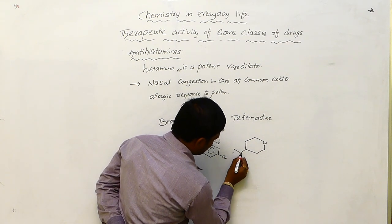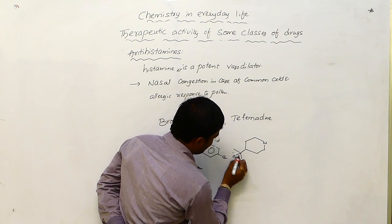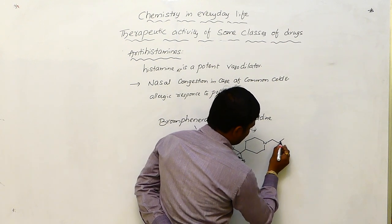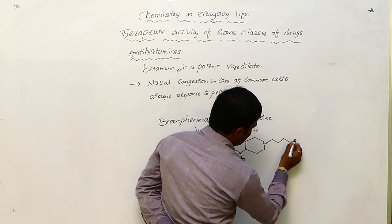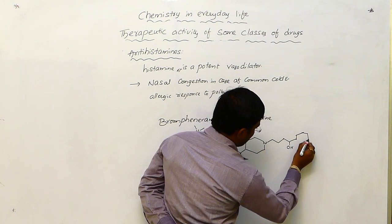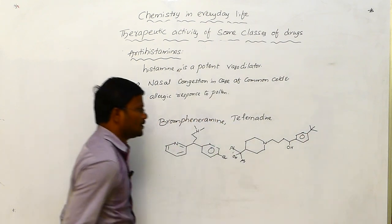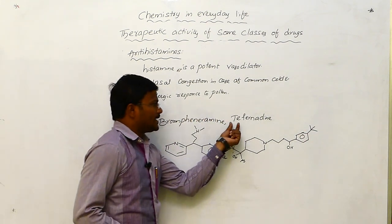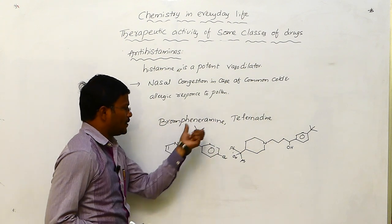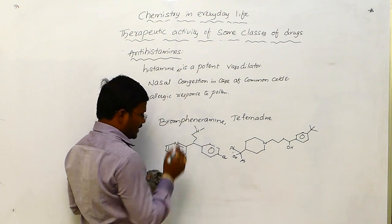The structure of terfenadine is represented with OH, OH, Ph, Ph, where N is connected to one more cyclic system. This is the structure of terfenadine, and this is the structure of brompheniramine. These two are called as anti-histamine drugs.